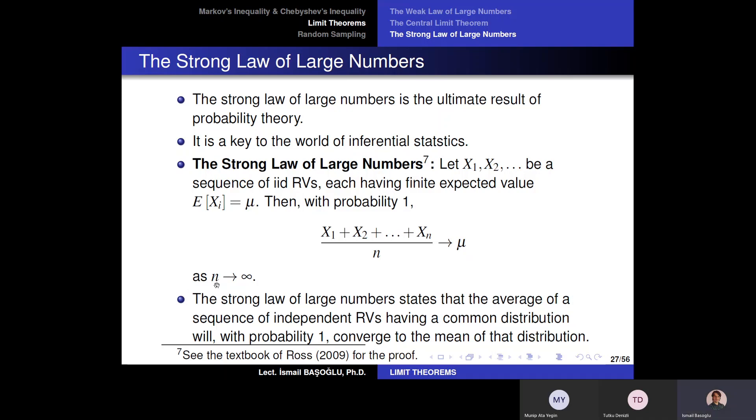So this is the strong law of large numbers. Are you interested in the income levels of Istanbul residents? The average income level of Istanbul residents? Let's say you are interested in it. Is it going to be possible for you to ask everyone in Istanbul? No.